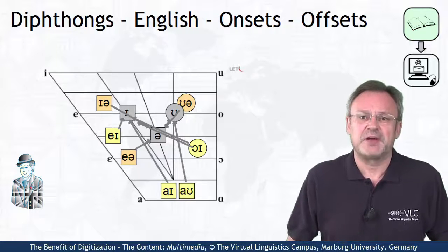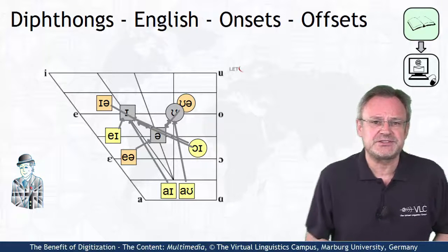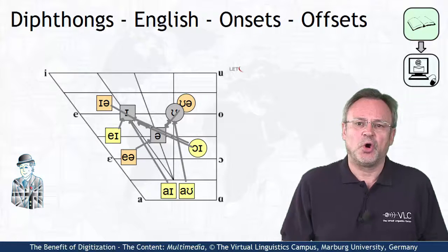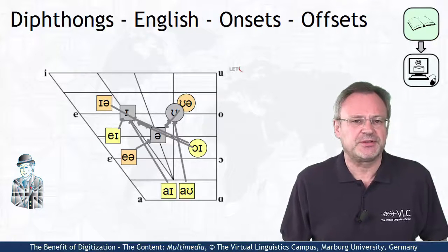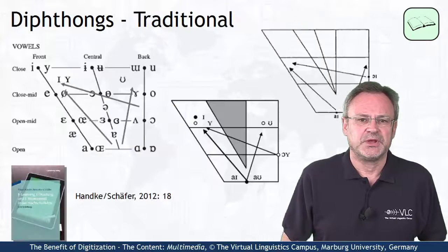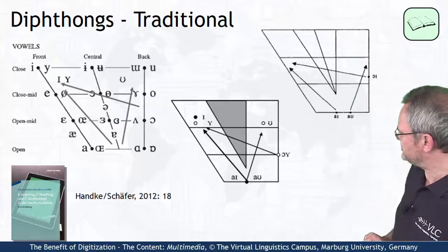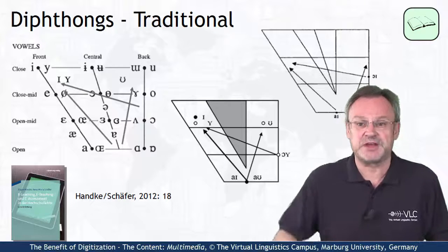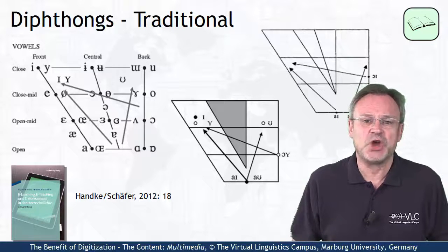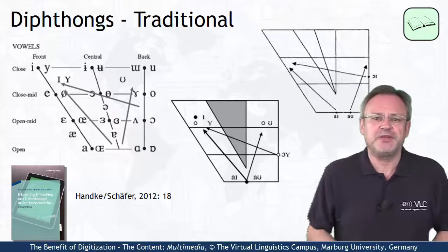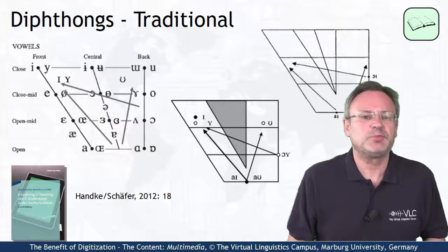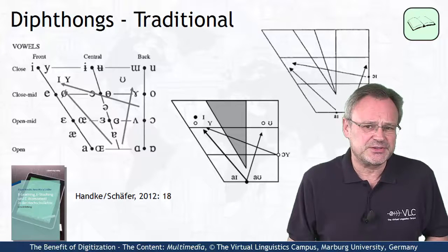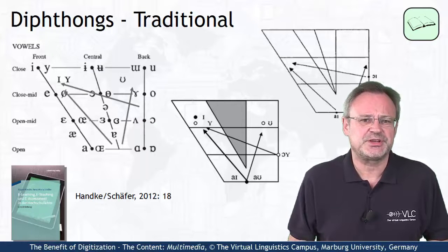Rather, diphthongs have normally only been represented as either eight isolated diagrams, or grouped into particular types. Look at these typically static, non-dynamic, non-interactive, and black and white presentations of just three of the eight diphthongs — an example we used in our 2012 book to show the disadvantage of traditional representations.